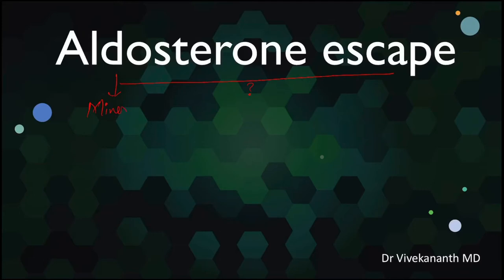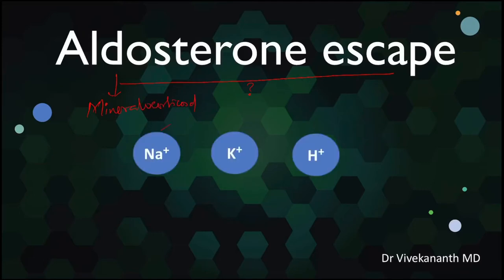Aldosterone is the primary mineralocorticoid which regulates the concentration of sodium, potassium, and hydrogen ions. Specifically, it increases the reabsorption of sodium and increases the excretion of both potassium and hydrogen ions. So when there is excess aldosterone, which is called hyperaldosteronism, there is increased sodium retention which causes volume expansion.